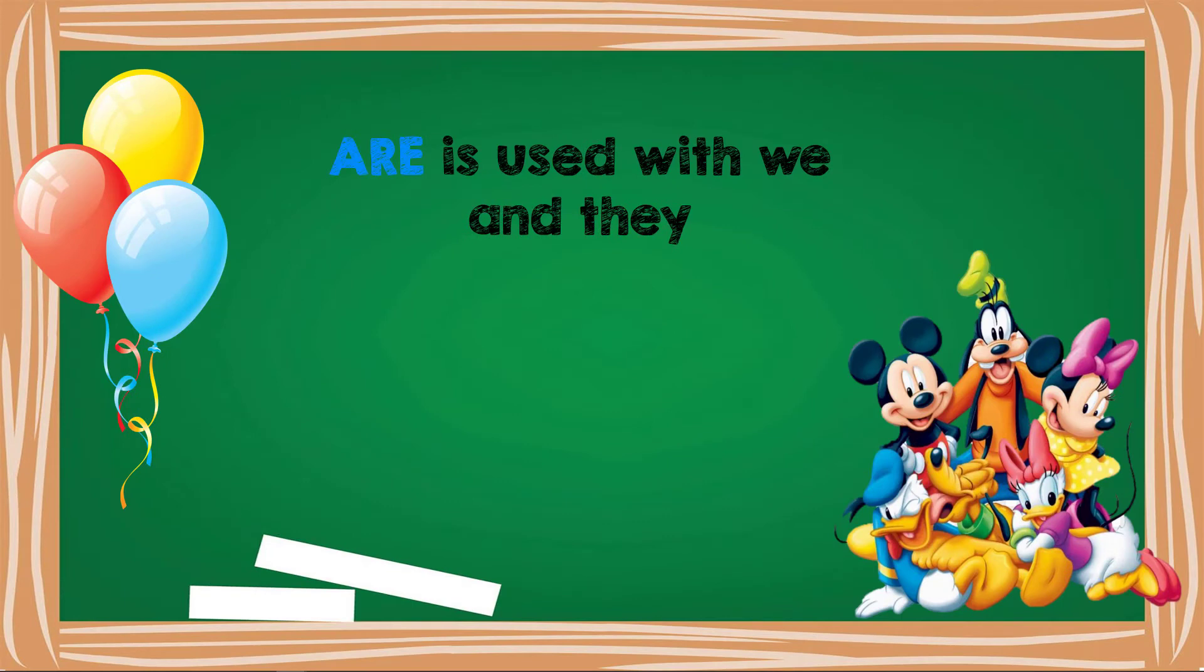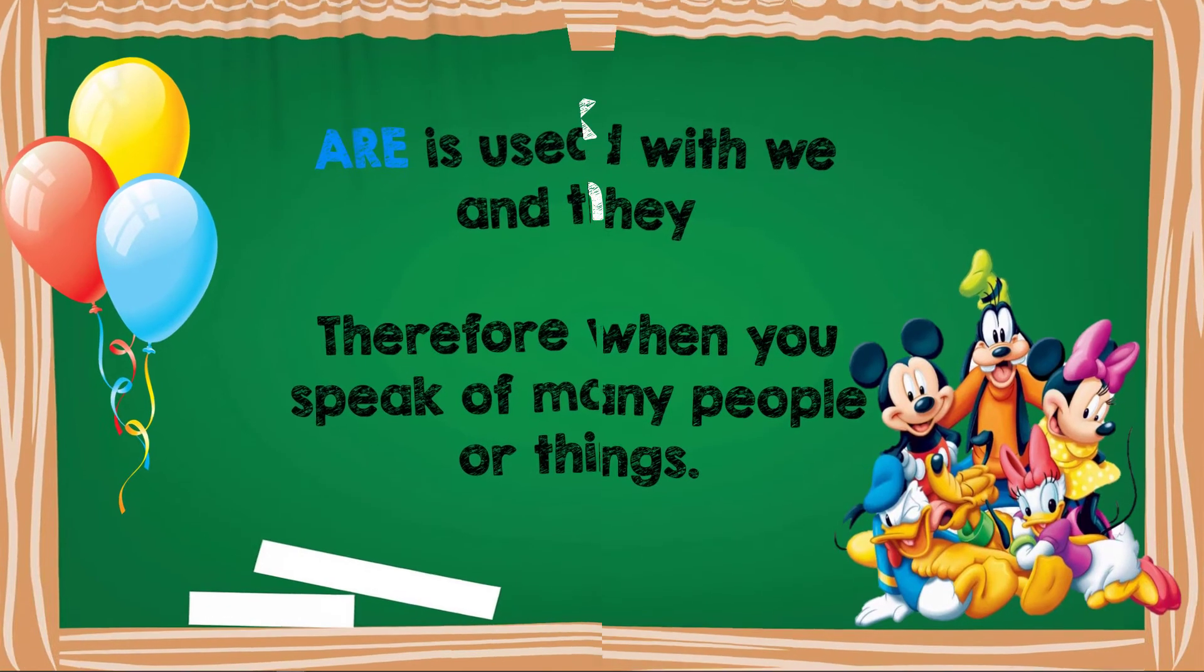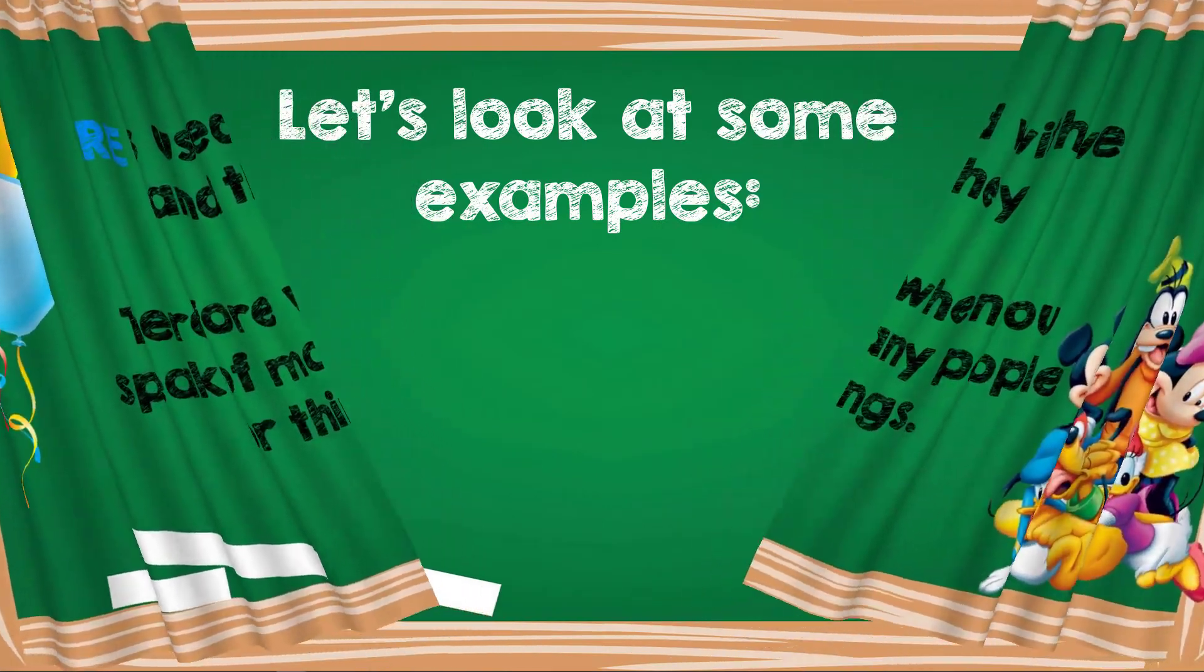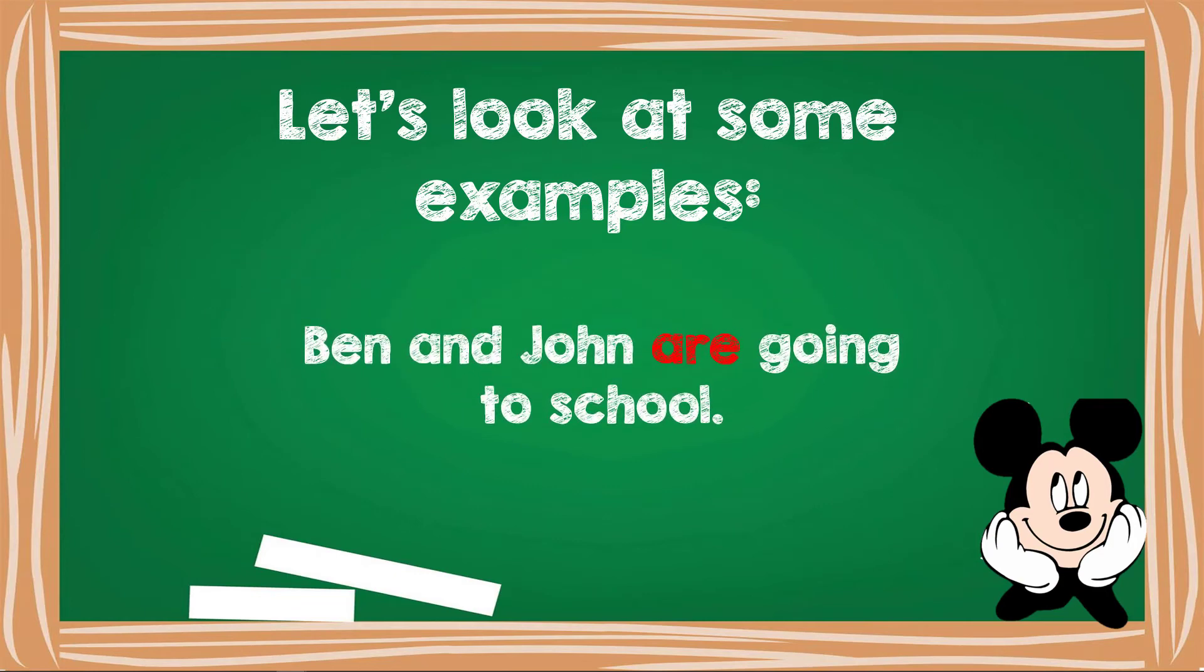Are is used with we and they. Therefore, when you speak of many people or things. Let's look at some examples. Ben and John are going to school. Ben and John are two people. We are extremely happy.